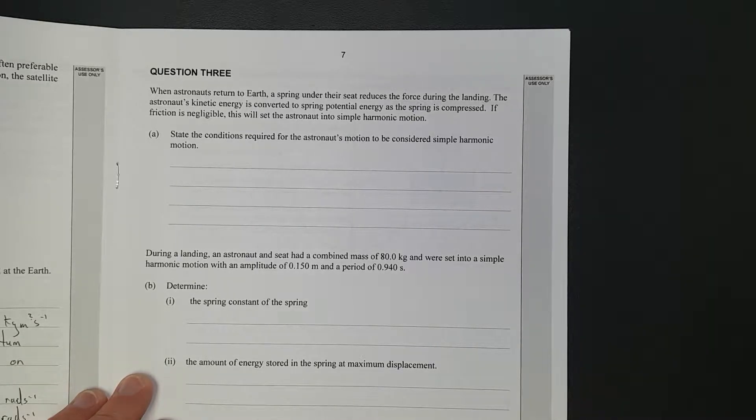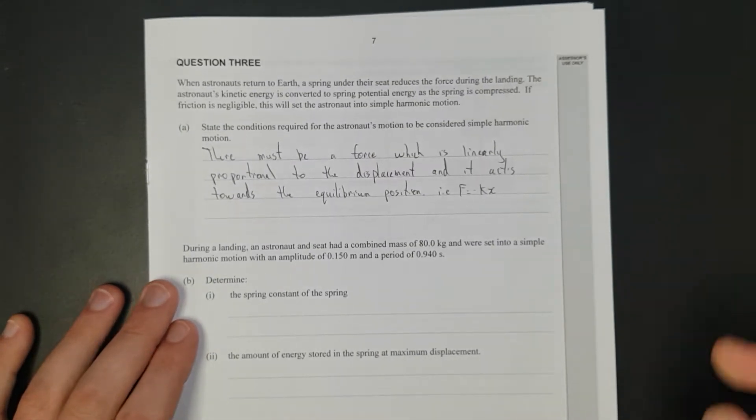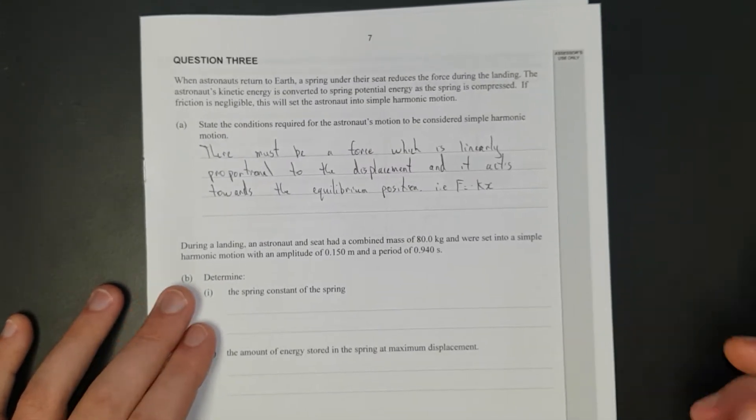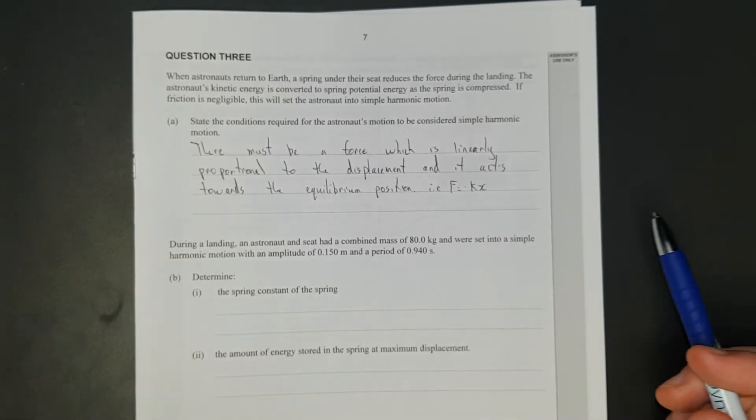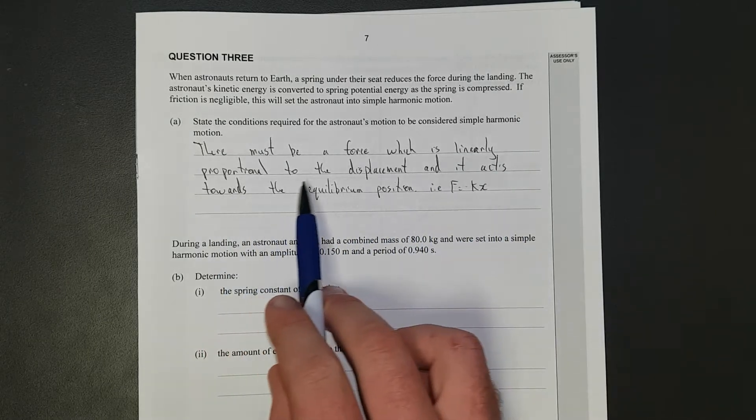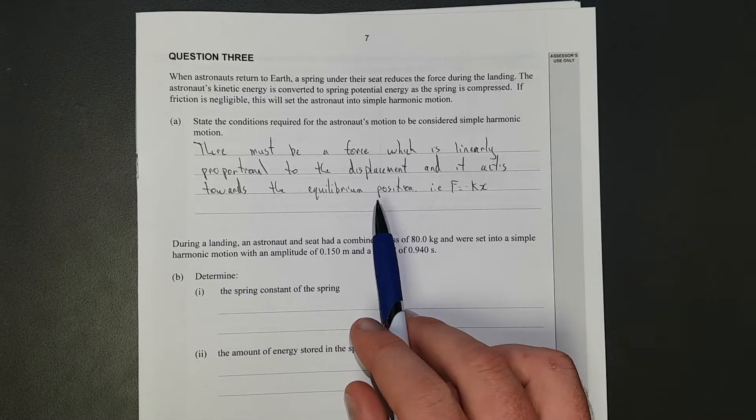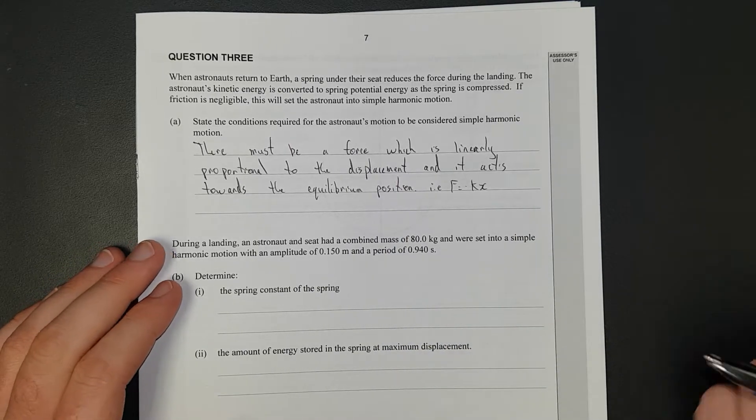State the conditions required for the astronaut's motion to be considered simple harmonic. This is pretty easy, they ask every year. You're just asking for the definition of simple harmonic motion. There must be a force which is linearly proportional to the displacement and it acts towards the equilibrium position. In other words, F equals negative K X, that's the definition of SHM.